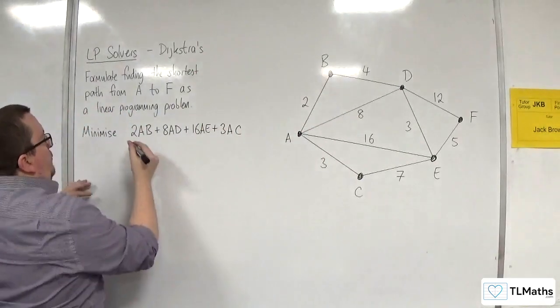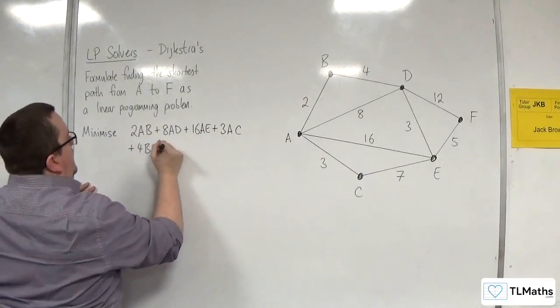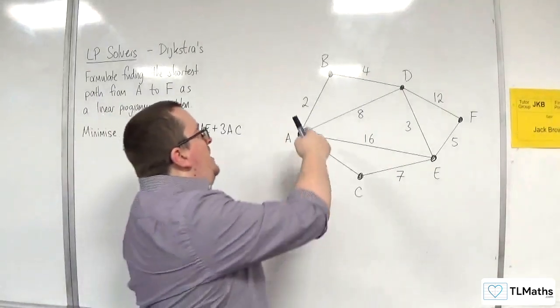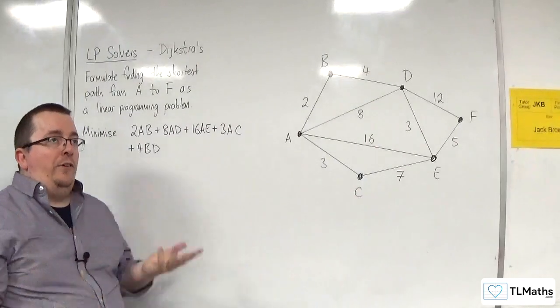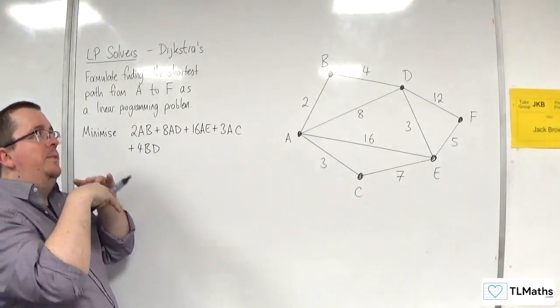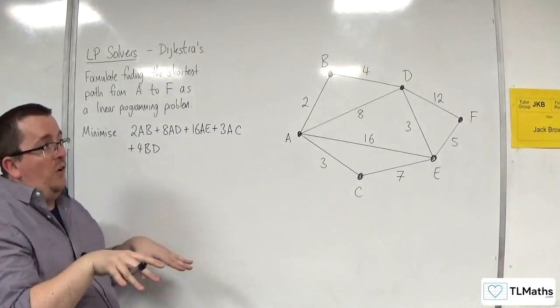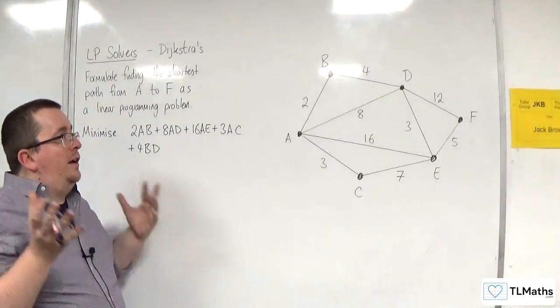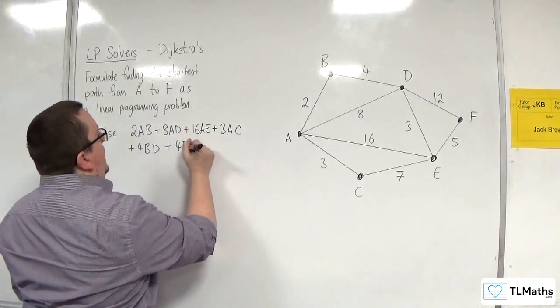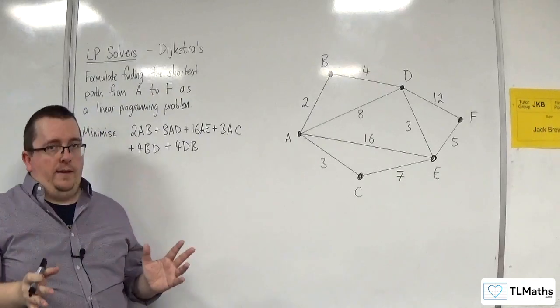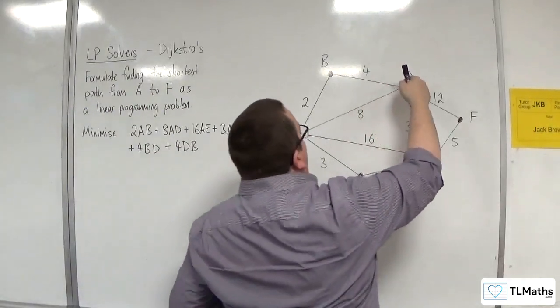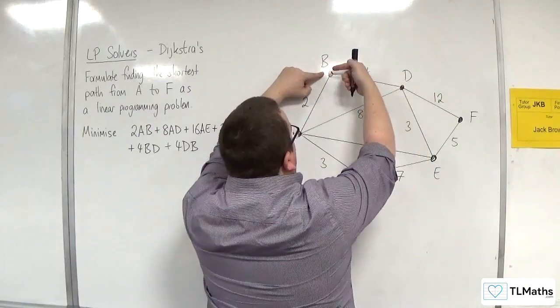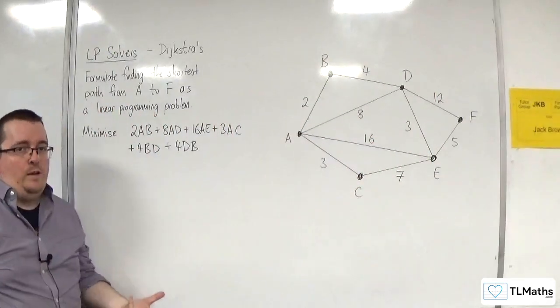So I am going to have BD, so 4 lots of BD. Now BD I could make directed because you would only want to go that route. But as I said previously, I'm going to go all out, and essentially I'm going to include DB because B and D just aren't the start or finish vertex. So I'm going to include 4 lots of DB in full knowledge that that would never get picked, because I would never go back on myself, because I know that I've only got AB, AB is only going that way, and I can't, when I go from D to B, go back along that route. So it would never get picked anyway. I know that.